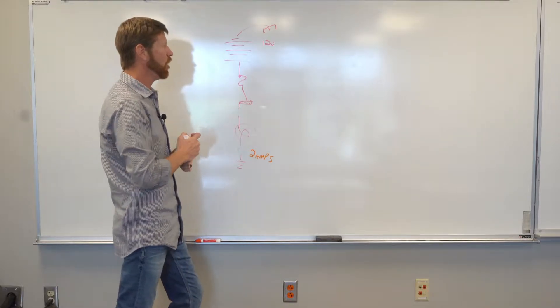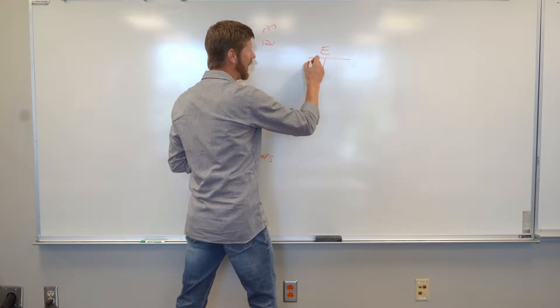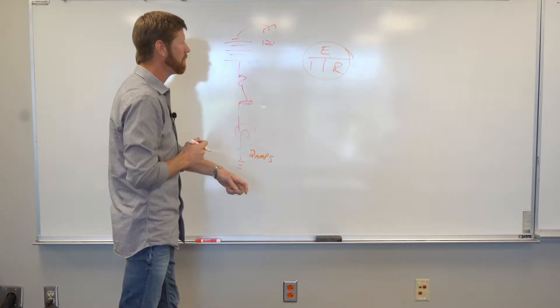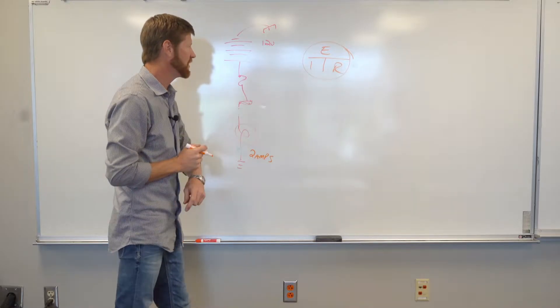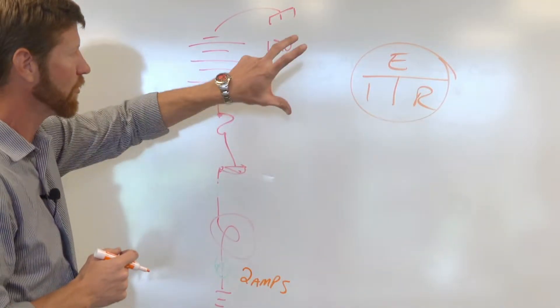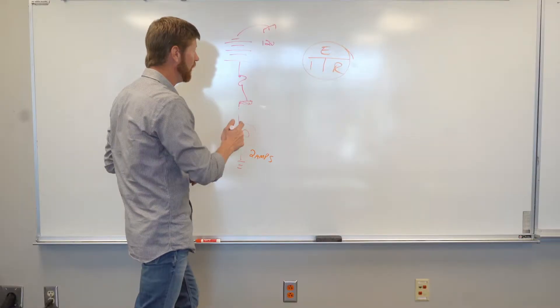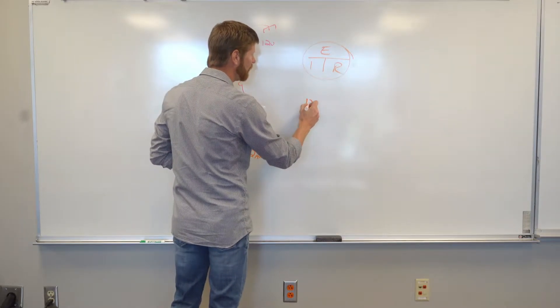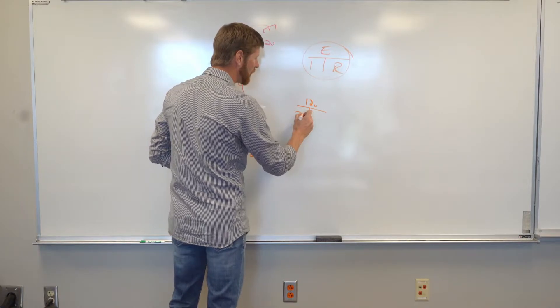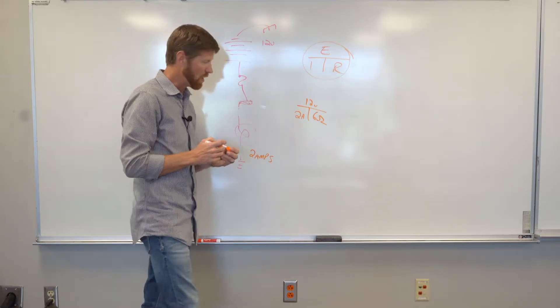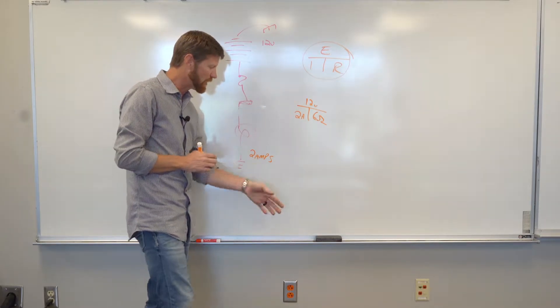Now, if I plug this into Ohm's Law, Ohm's Law is E over I times R. So the voltage is divided by the amperage times the resistance. So if we plug these numbers into this solving circle, we're going to find the missing one. So if I have 12 volts and I know there's two amps in the circuit, then that gives me a total of six ohms. So pretty easy for series.